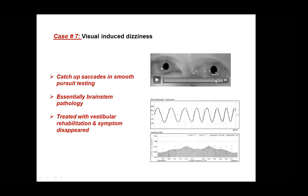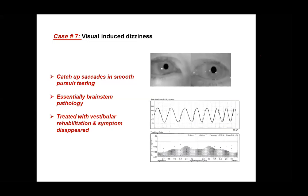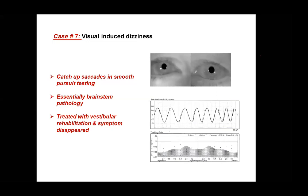This is another patient. They have visual-induced vertigo and this catch-up saccade in smooth pursuit testing. You can see it clearly in the video and in the trace — the catch-up saccade and reduced smooth pursuit. This was treated by vestibular rehabilitation. The symptom totally disappeared, but interestingly they still have the sign of catch-up saccade, even though symptoms with rehab have disappeared.